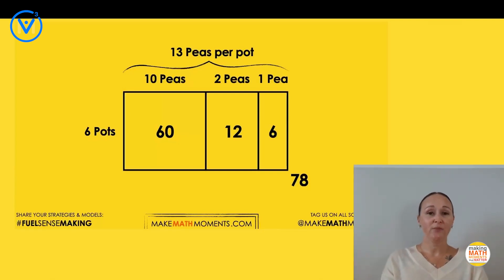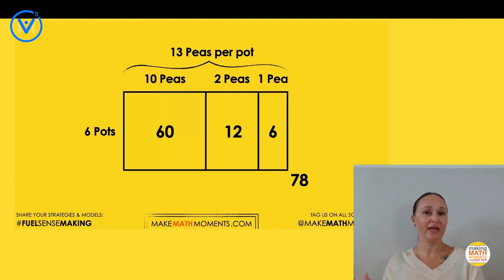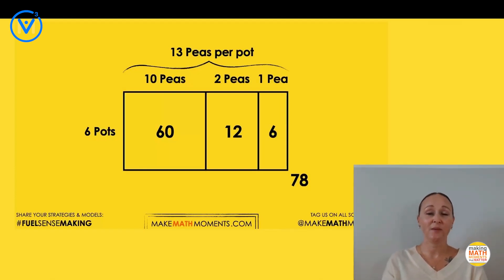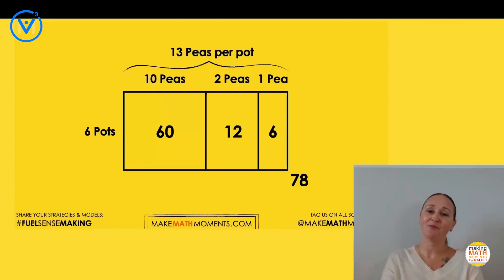Students might approach this task through true fair sharing, where they actually take a concrete material and start to hand them out — one pea for every pot over and over again until they've depleted the entire collection. Some students might be bold and put 10 peas in every pot right off the hop because they know there are at least 60 peas, and then fair share out the rest. At the end of the day, we reveal that there are 13 peas per pot.